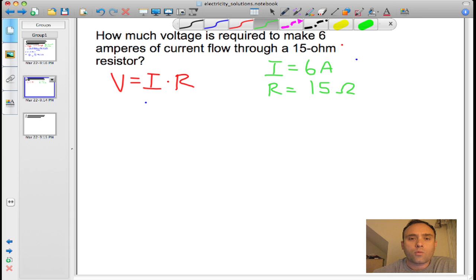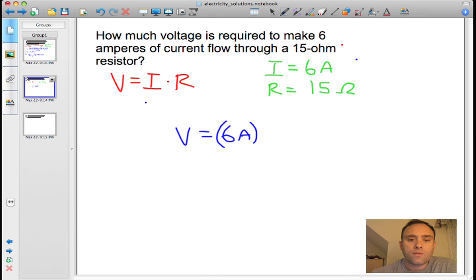So with that information you can go ahead and make the substitution. The voltage of this system is equal to 6 amps times 15 ohms.